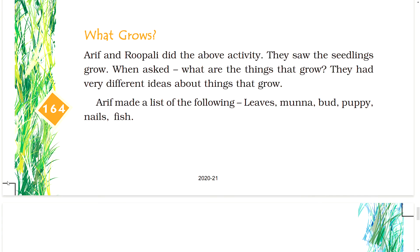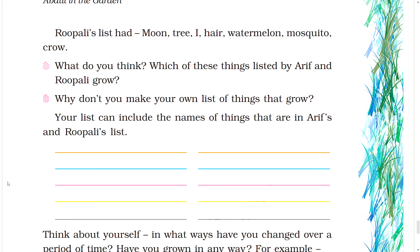What grows? Arif and Rupali did the above activity. They saw the seedlings grow. When asked what things grow, they had very different ideas. Arif's list included: leaves, Munna, bird, puppy, nails, fish. Rupali's list included: head, moon, tree, eye, hare, watermelon, mosquito, crow. Which of these things listed by Arif and Rupali actually grow? Why don't you make your own list of things that grow? Your list can include names of things from Arif's and Rupali's lists.